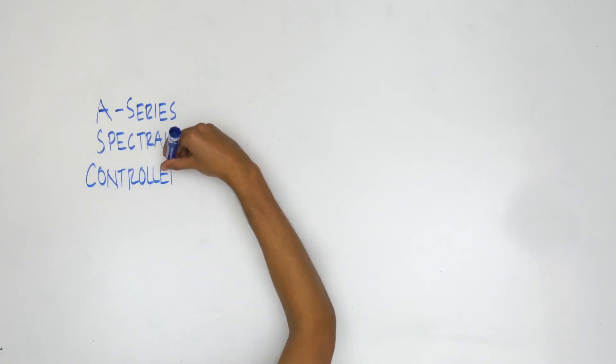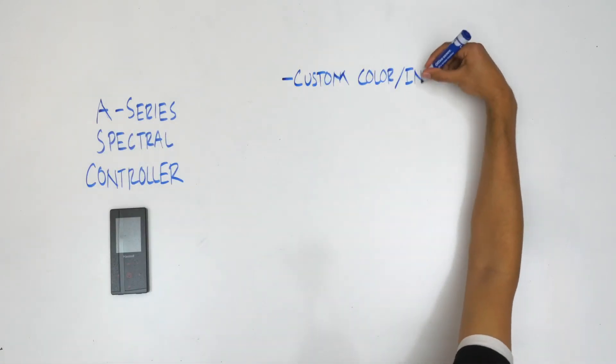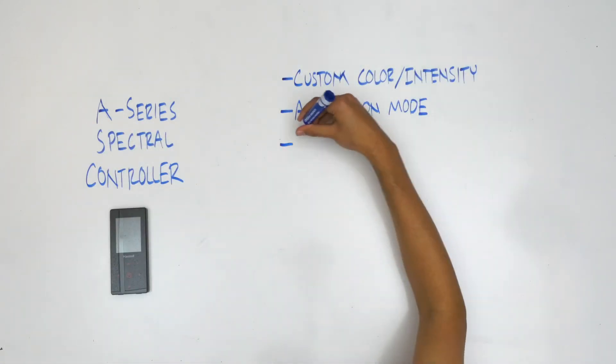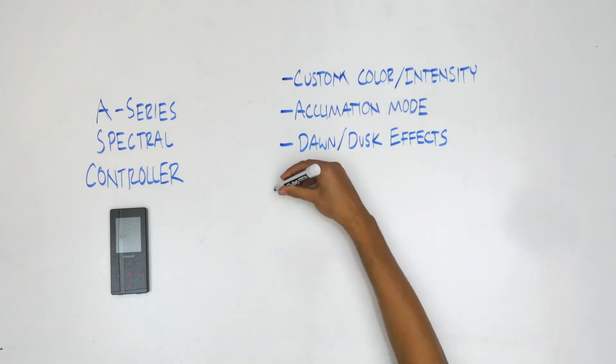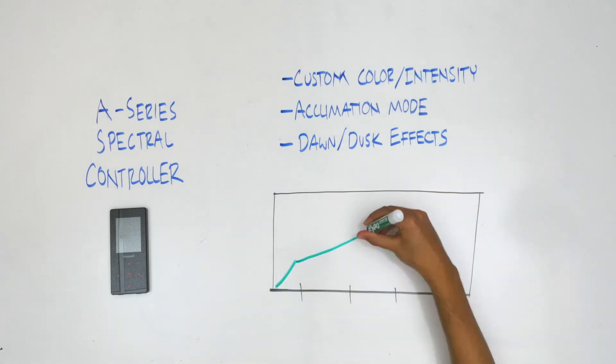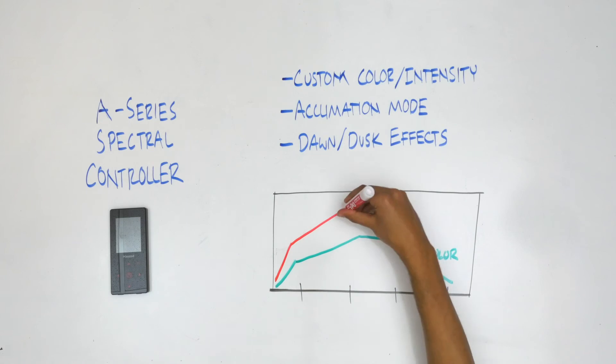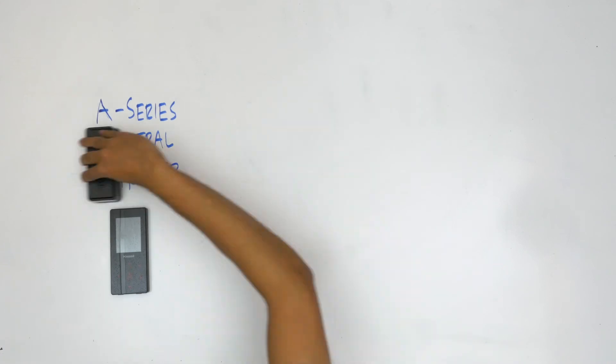The A series spectral controller allows you to customize color and intensity settings, utilize acclimation mode, and create unique dawn and dusk effects by altering light intensity and color throughout different time points. For a more in-depth look at the features of the A series spectral controller, please refer to the spectral controller video.